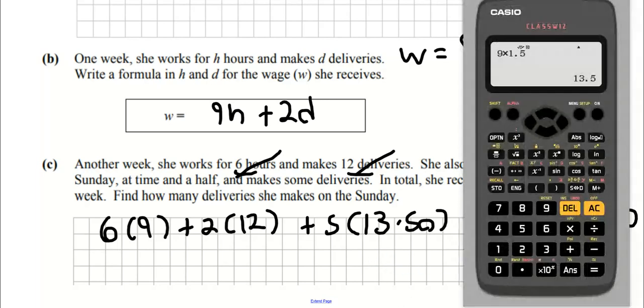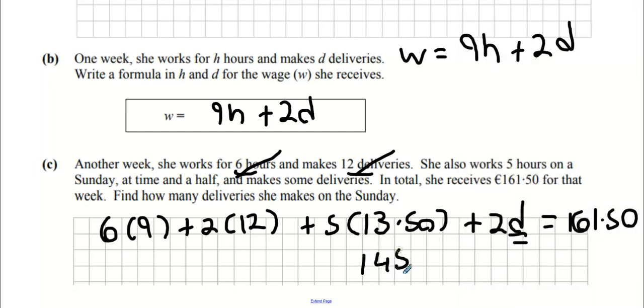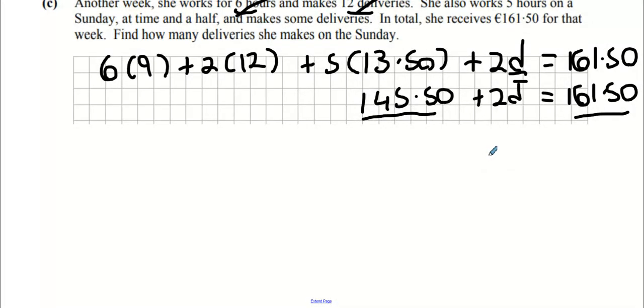Got a bottle of the calculator. We're going to get 54, we're going to get 24. 5 times 13.50 is going to tie up to 145 euro and 50 cents. Plus my 2 times my delivery equals 161 euro and 50 cents. I'm going to take 145.50 away from 161.50. 2 times D is 16, so your D value must be 8. You must have made 8 deliveries on that Sunday.